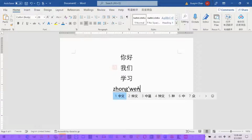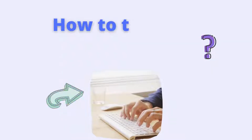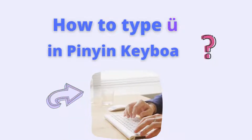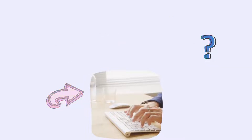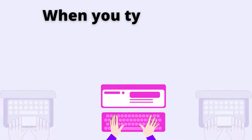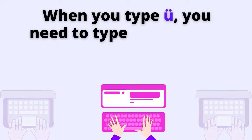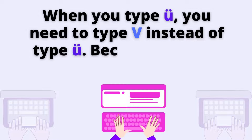Do you feel it's very easy to type Chinese characters? Just remember one thing: when you type the sound 'ü', you need to type V instead of 'yu'.